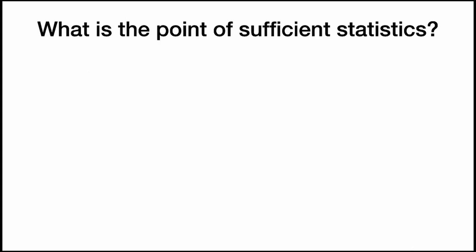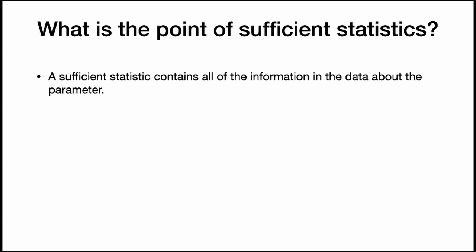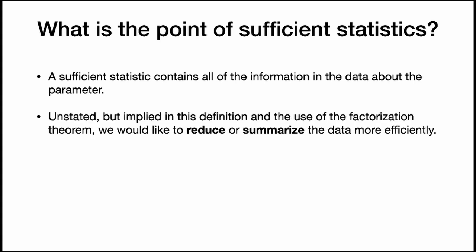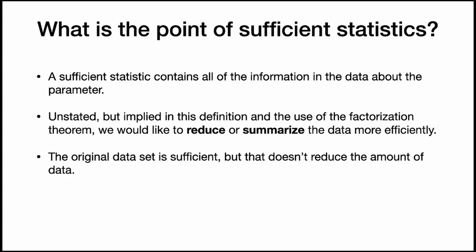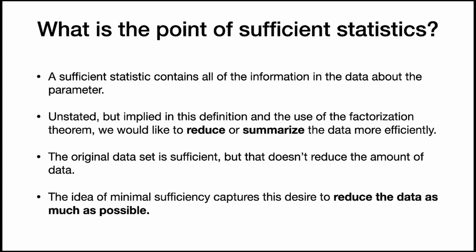So what is the point of sufficient statistics? A sufficient statistic contains all of the information in the data about the parameter. Unstated but implied in the definition and the use of the factorization theorem is the idea that we would like to reduce or summarize the data more efficiently. The original data set itself is sufficient, but that doesn't really reduce the amount of data. The idea of minimal sufficiency captures this desire to reduce the data as much as possible.